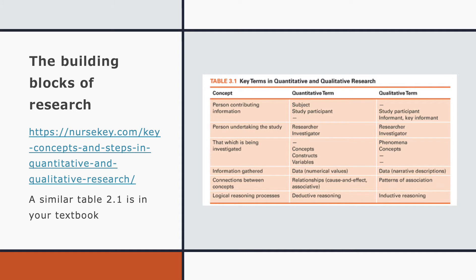The connections between concepts in quantitative research are relationships. They are essentially looking for cause and effect or associations, whereas in qualitative research you're looking for patterns of association. As you go through the semester and read articles of both types, this will become more obvious to you. The logical reasoning process: deductive reasoning is used in quantitative and inductive reasoning is used in qualitative.